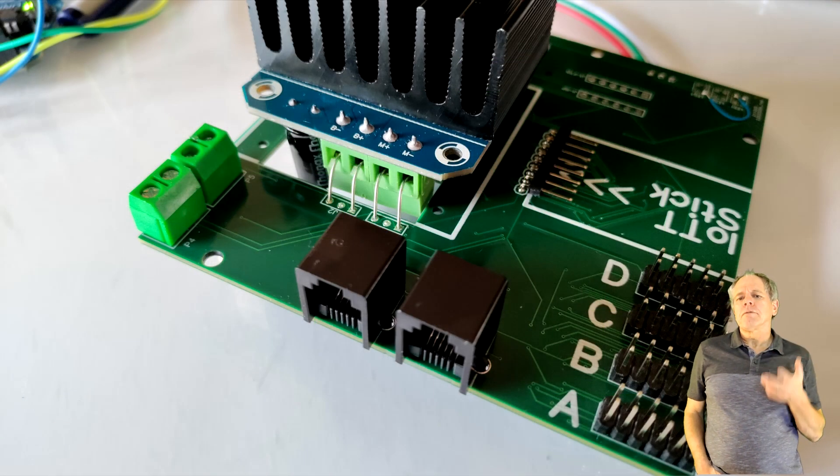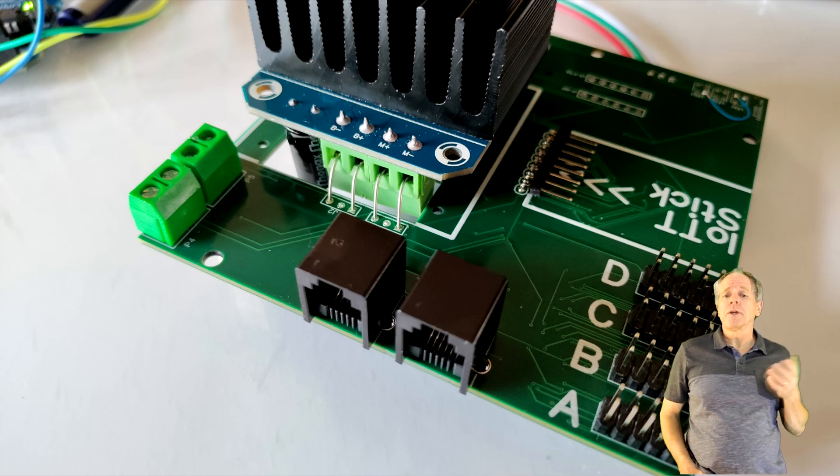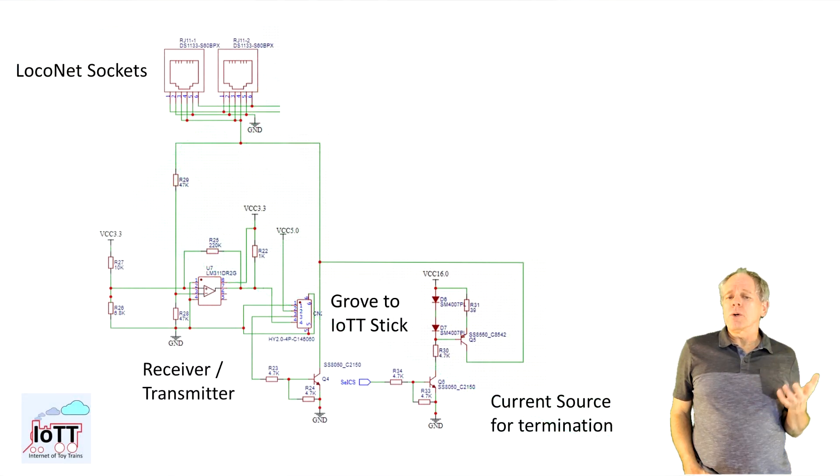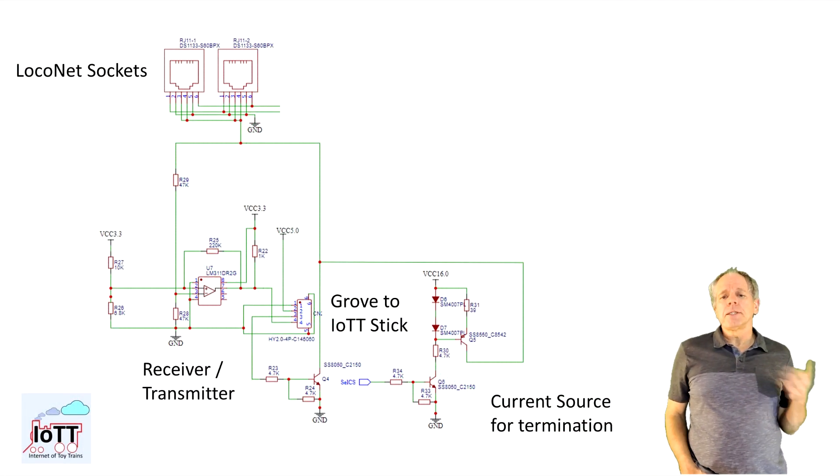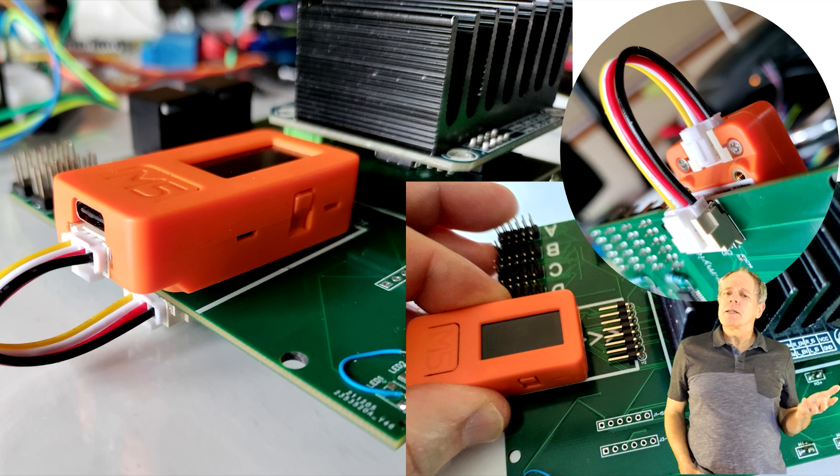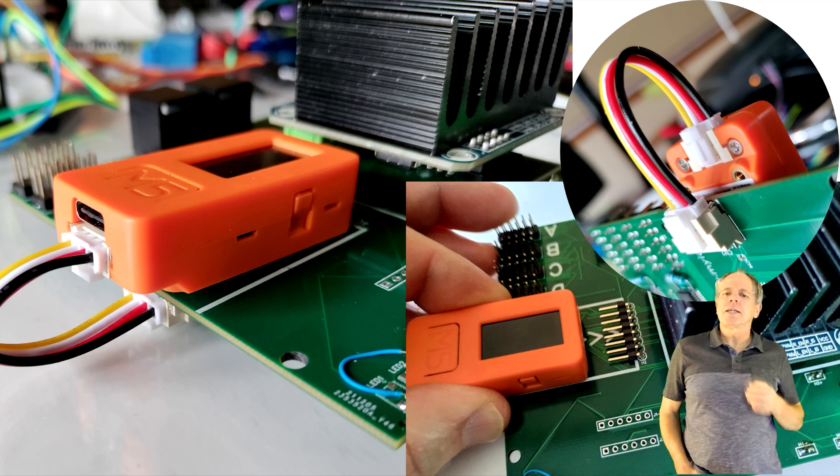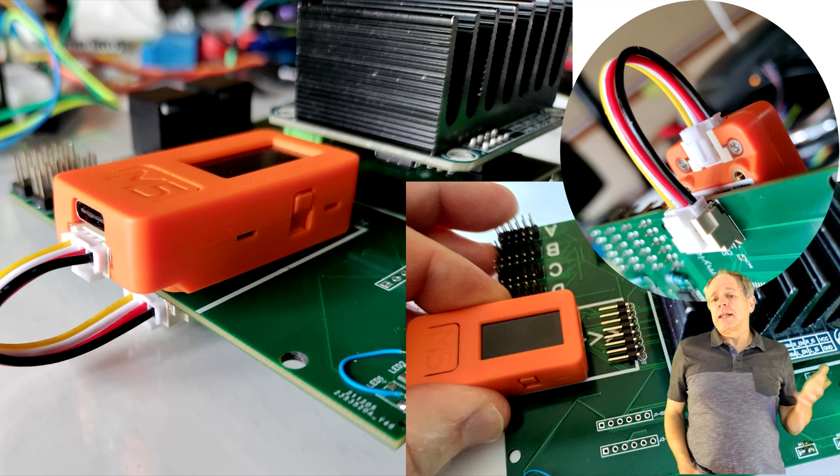The next block to look at was the LocoNet interface which actually is the most complex function block of the hardware. The first part is the LocoNet interface itself. This is basically the same circuit as used for the LocoNet breakout board, only that it is integrated in the board. And since the Red Hat++ is based on the IoTT stick, I still make use of the Grove port so the LocoNet communication is sent via a 50mm Grove port cable to the other side of the stick. That part was relatively simple, except that it did not work.